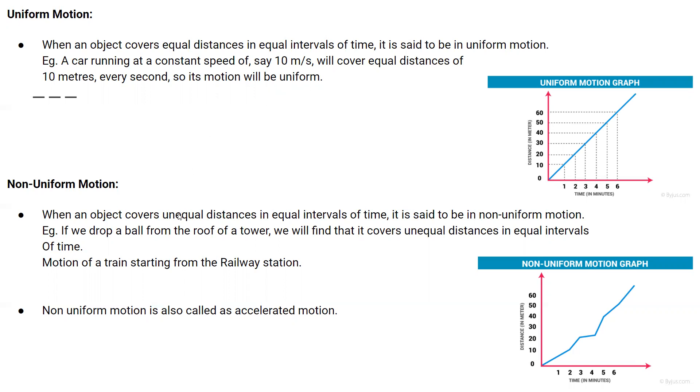When is non-uniform motion? Non-uniform motion: when an object covers unequal distances in equal intervals of time, it is said to be non-uniform motion.